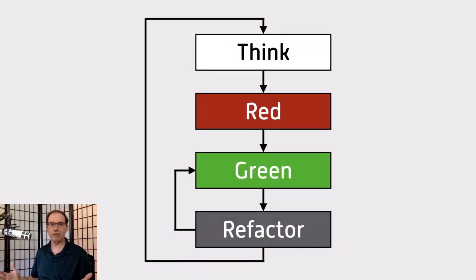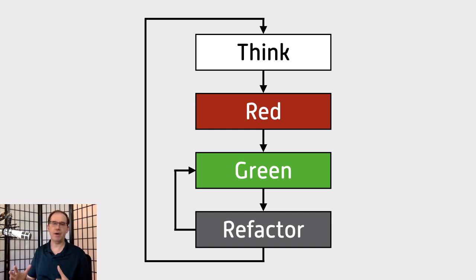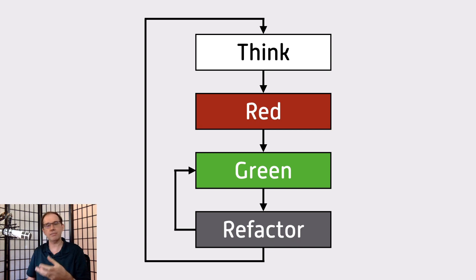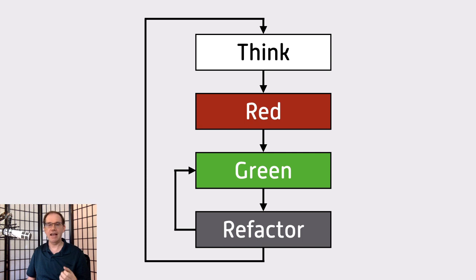Test-driven development is red-green-refactor, as most of us know by now. It is a series of validated hypotheses. We're going to write a little bit of test code, make a prediction about how that test is going to fail, watch it fail, write a little production code, make a prediction about how it's going to pass, watch it pass, refactor, and repeat.